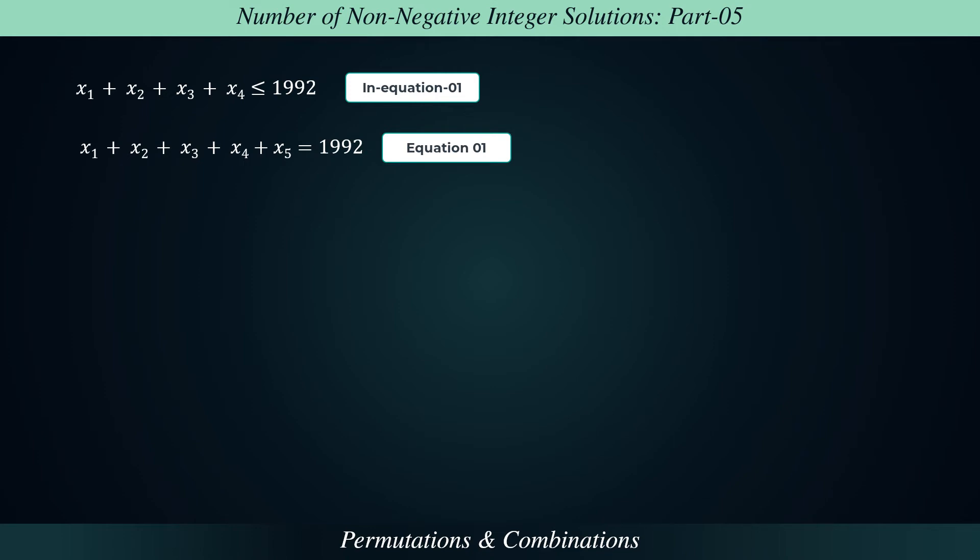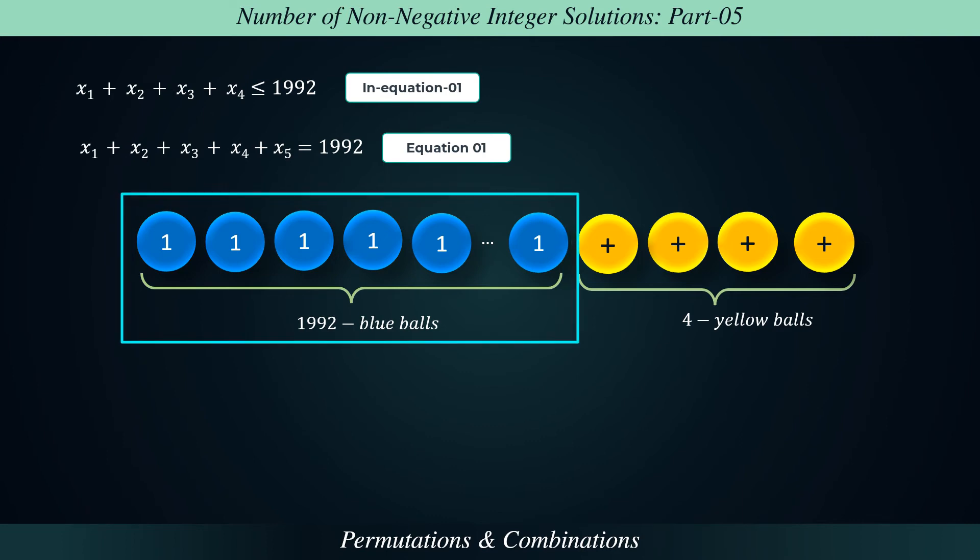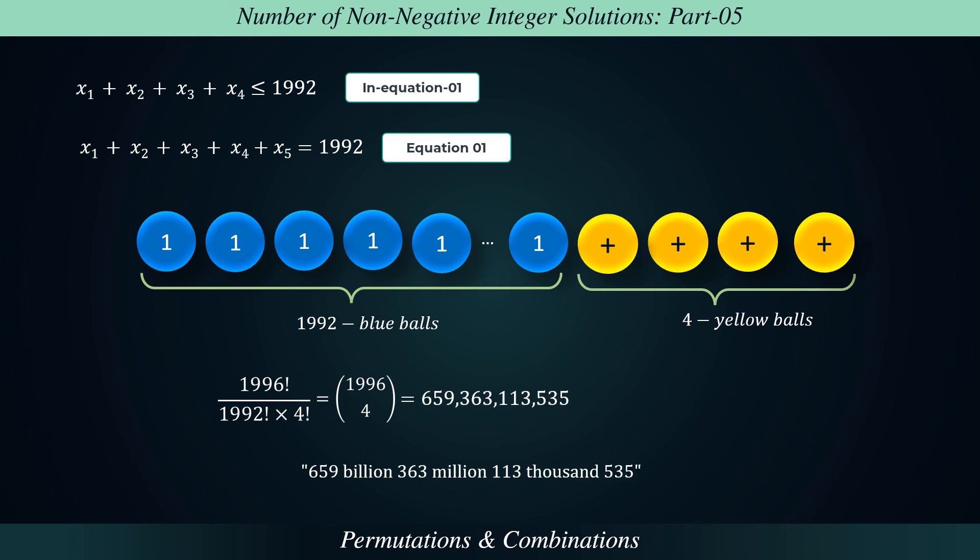And we know how to find the number of non-negative integer solutions of a linear equation. It is as good as arranging 1,992 blue-colored balls and 4 yellow-colored balls in a line. We have a total of 1,996 balls. So the total number of ways of arranging 1,996 balls in which 1,992 are of one kind and 4 are of a second kind is equal to 1,996 factorial divided by the product of 1,992 factorial and 4 factorial, which is the same as 1,996 choose 4, which equals 659,363,113,535.